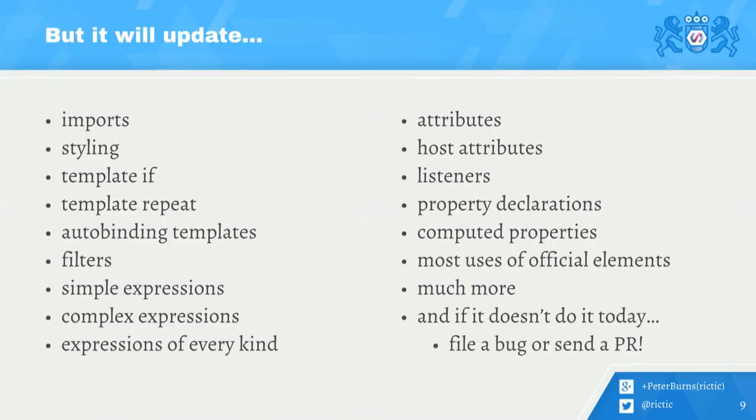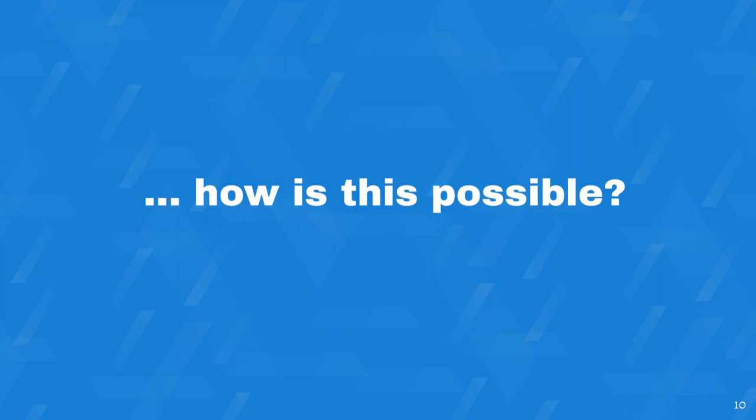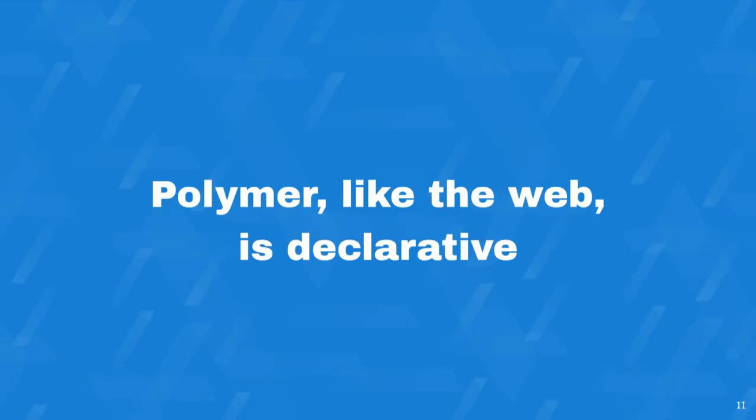And if it doesn't do it today, file a bug, send a PR. So probably at least a couple people in the audience are thinking: what's going on? This is weird, right? JavaScript libraries do not often release tools that will update you to the latest version. Maybe it's that Polyup has a bunch of black magic in it, and it was very hard to write and took an incredibly long time. But the answer is actually more interesting — it's actually because Polymer, like the web, is declarative.